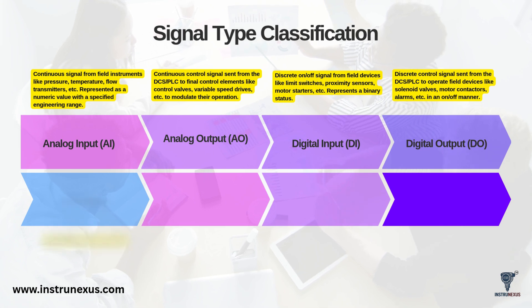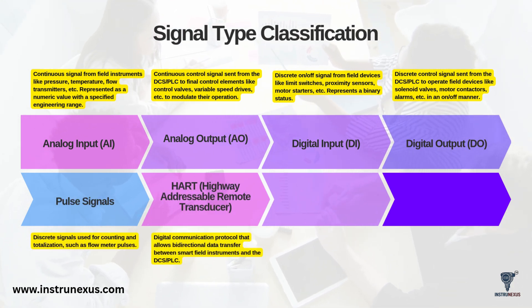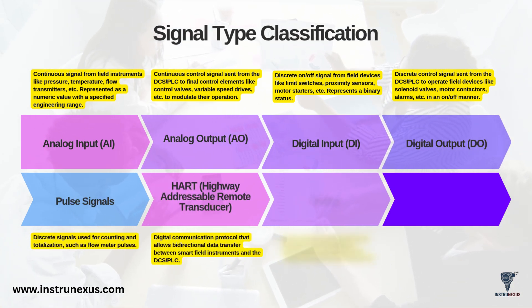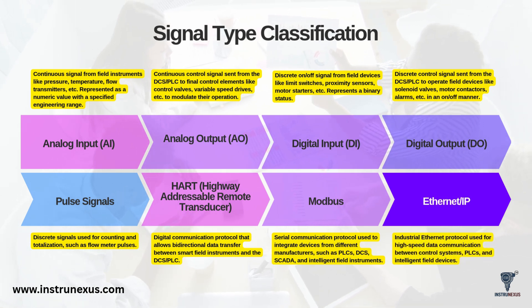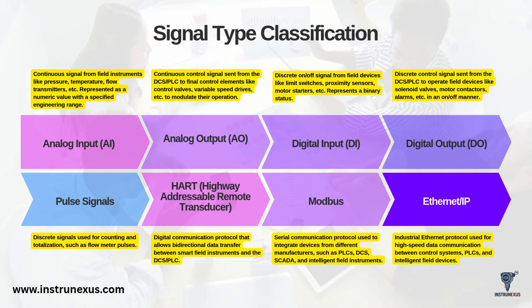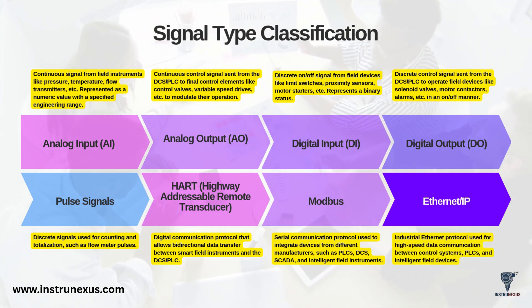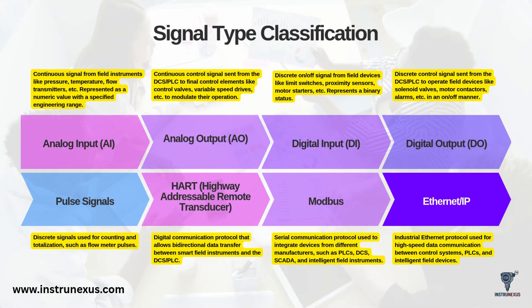Beyond these, we also classify other signal types, such as pulse signals for flow meters, and communication protocols like HART, Modbus, or Ethernet IP, which are used for smart instruments and package integration.